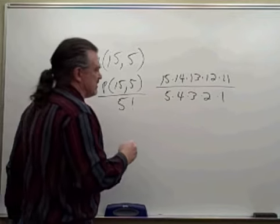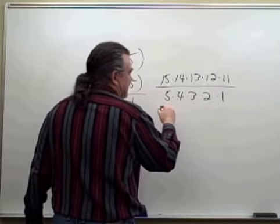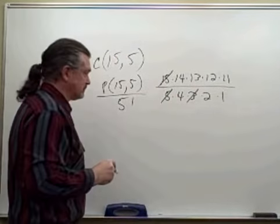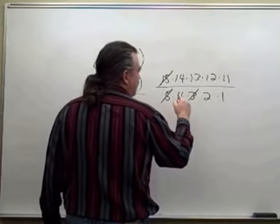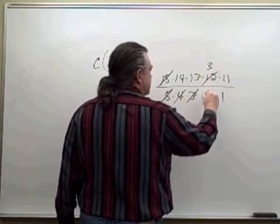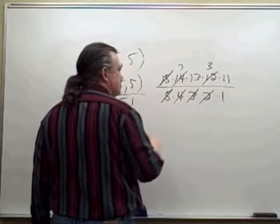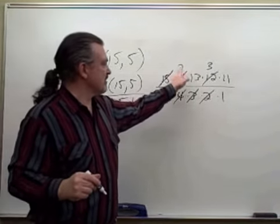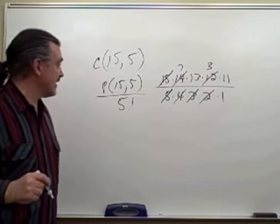So let's see what we can do to make this simpler. Well, let's see. Five times three is 15. Four goes into 12 three times. Two goes into 14 seven times. So that would be the simple multiplication we would need to do: seven times 13 times three times 11.